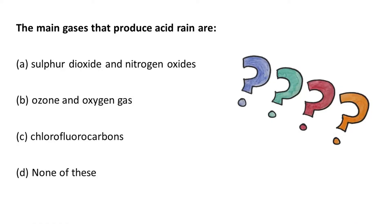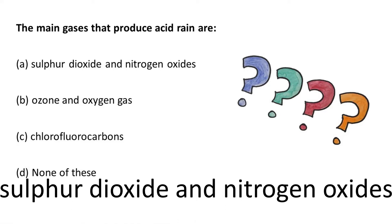The main gases that produce acid rain are discussed in this MCQ video. The options are: A) sulfur dioxide and nitrogen oxide, B) ozone and oxygen gas, C) chlorofluorocarbons, D) none of these. The answer is A — sulfur dioxide and nitrogen oxide.